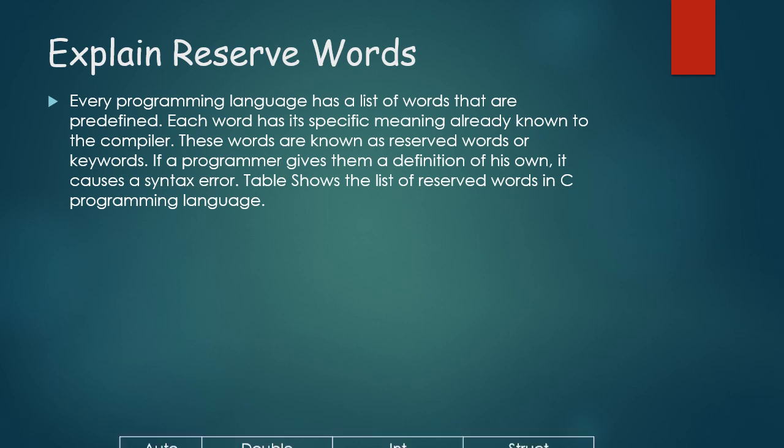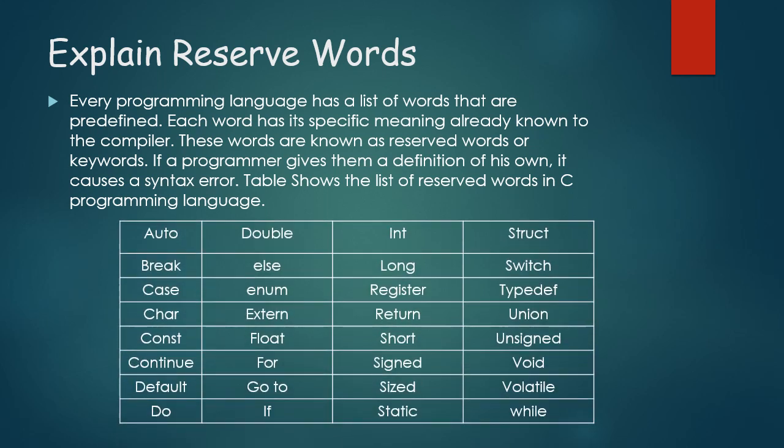The following is the list of reserved words in C programming language: auto, break, case, char, const, continue, default, do, double, else, enum, extern, float, for, goto, if, int, long, register, return, short, signed, sizeof, static, struct, switch, typedef, union, unsigned, void, volatile, while. These are the reserved words defined in the C programming language.